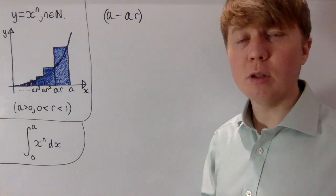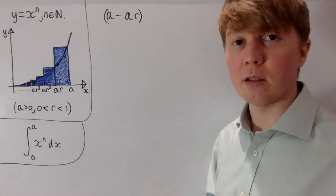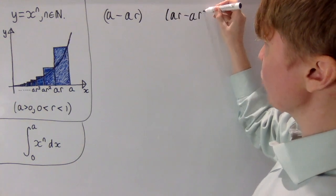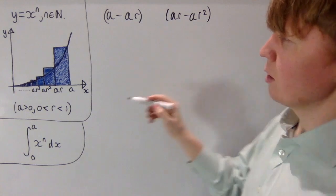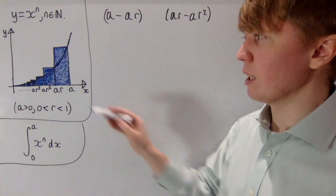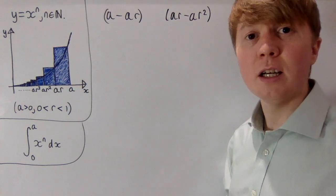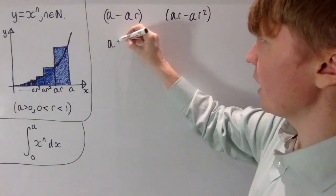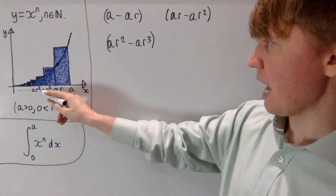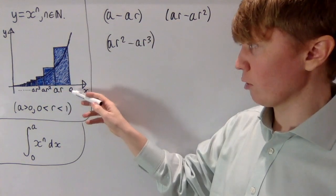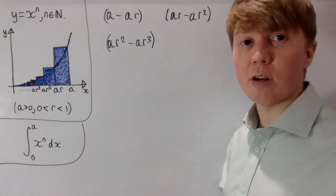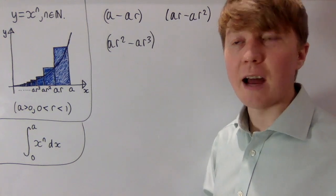We want our next rectangle to only be R times as wide. So that tells us we need to go from AR back to AR squared for our second rectangle. Then similarly we want our third rectangle to only be R times as wide as our second one, so multiplying by R we get width AR squared minus AR cubed, giving us the point AR cubed and so on. We follow this geometric progression AR squared and so on along the axis to give us our rectangles to approximate the area under the curve.